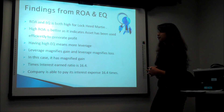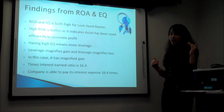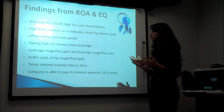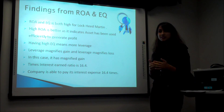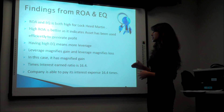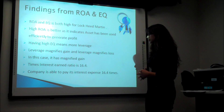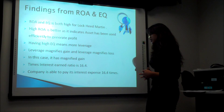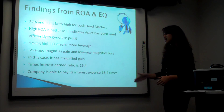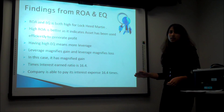Though the equity multiplier for Lockheed Martin is high, their return on equity is very high according to the graph we looked at earlier. So in this case it is not a very bad thing, because leverage has magnified gains. High ROA is better as it indicates assets have been used efficiently to generate profit. We'll also look at the time interest earned ratio, which is 16.4 for Lockheed Martin, indicating that the company is able to pay its interest expense 16.4 times with its return.